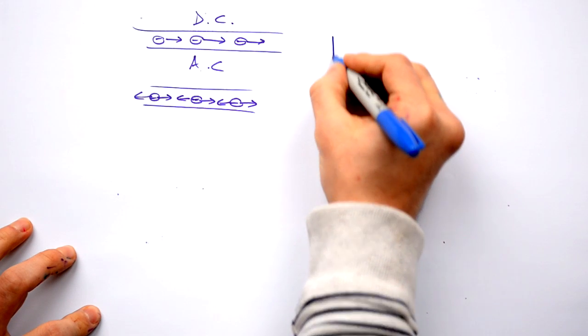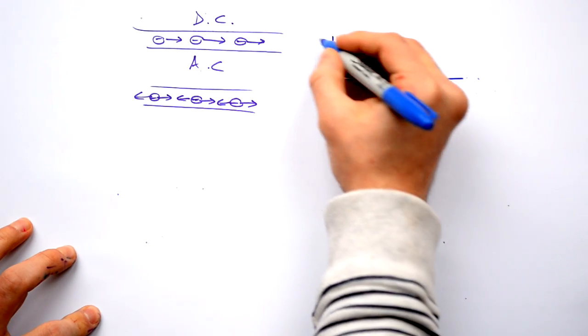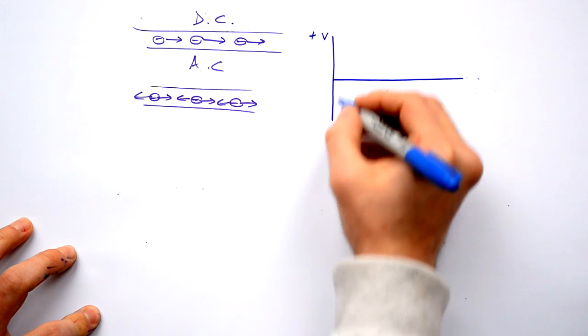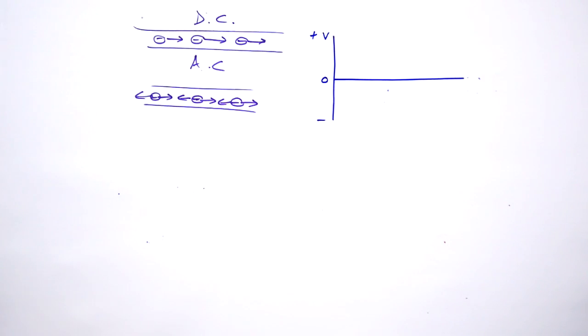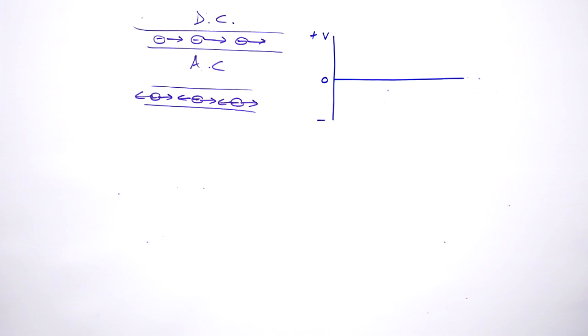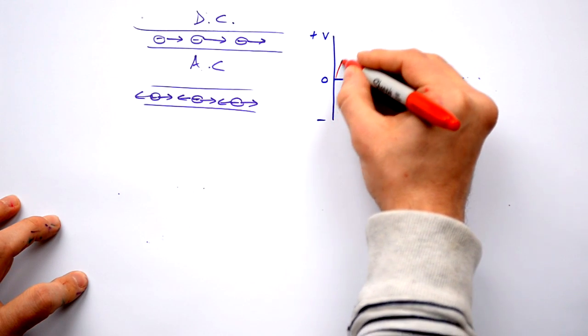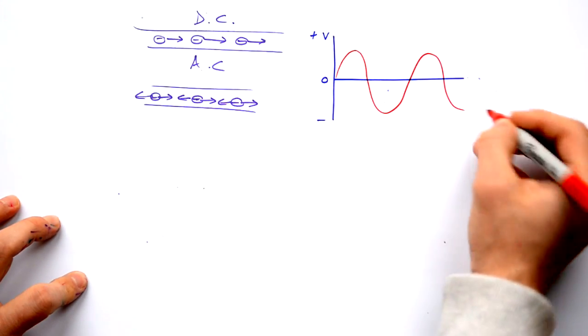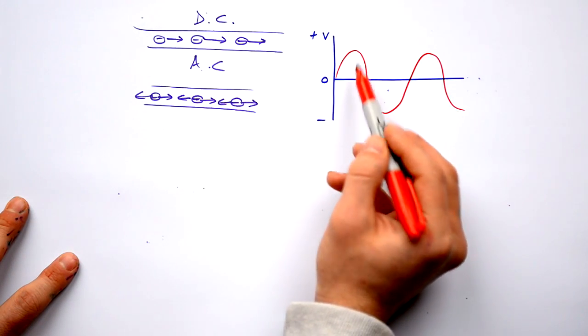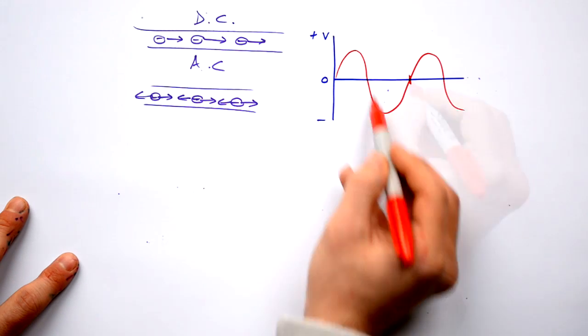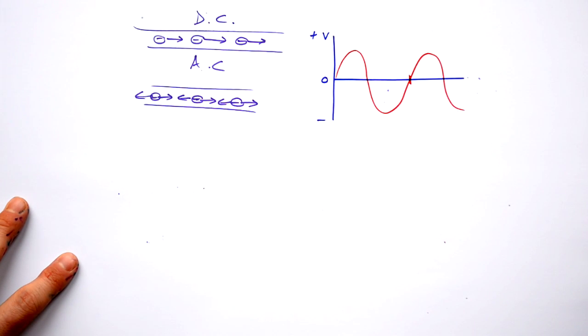What does this look like on a graph? We have a positive voltage and a negative voltage and we have a sine wave. For UK mains, this is 50 Hertz, so one complete wave 50 times a second.